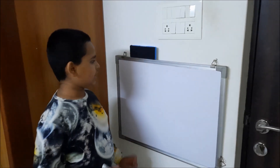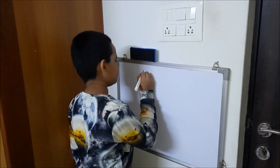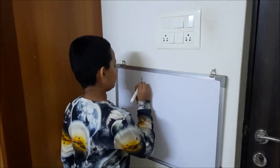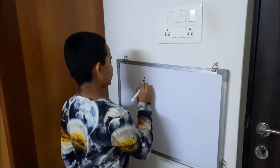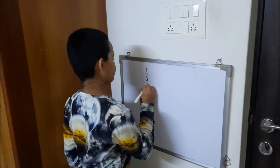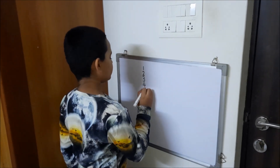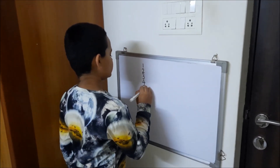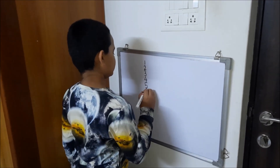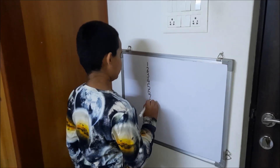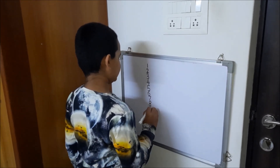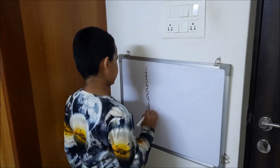First we will learn the 16 times table. First we have to write 1 to 10 numbers in the left side: 1, 2, 3, 4, 5, 6, 7, 8, 9, 10.